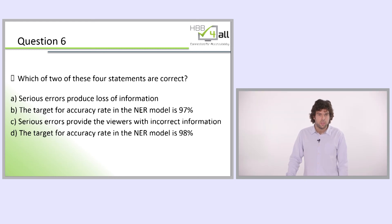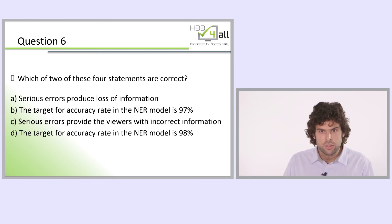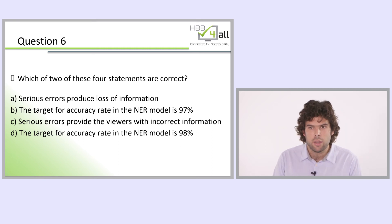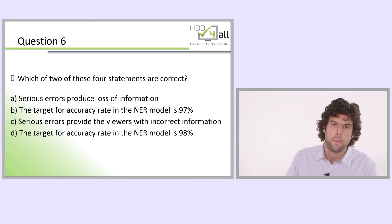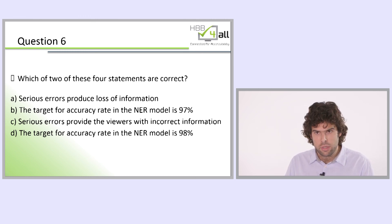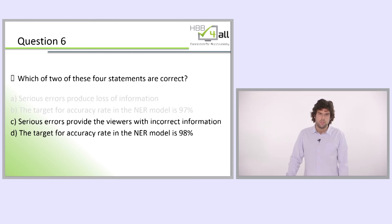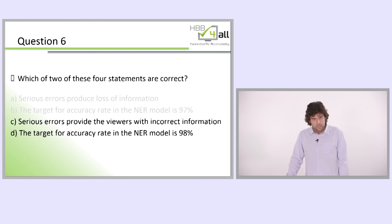Question 6 deals with this section as the final question: which two of these four statements are correct? First, serious errors produce loss of information. Second, the target for accuracy rate in the NER model is 97%. Third, serious errors provide the viewers with incorrect information. Fourth, the target for accuracy rate in the NER model is 98%. The answer is C and D: serious errors provide the viewers with incorrect information, and the target for accuracy rate in the NER model is 98%.